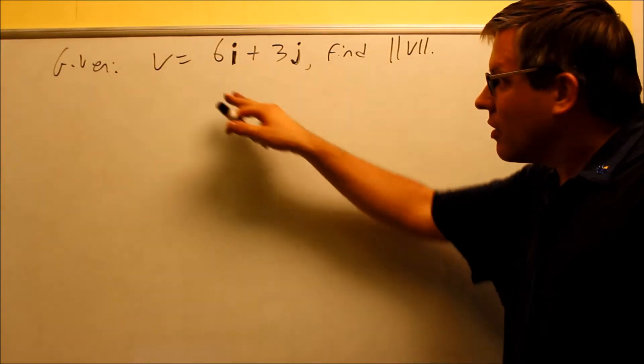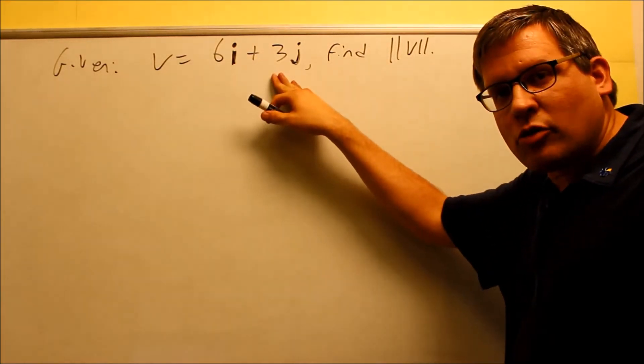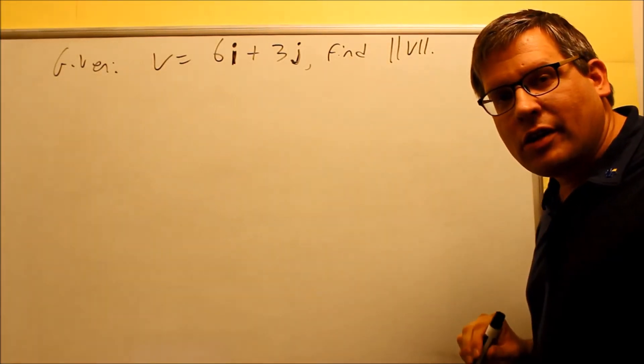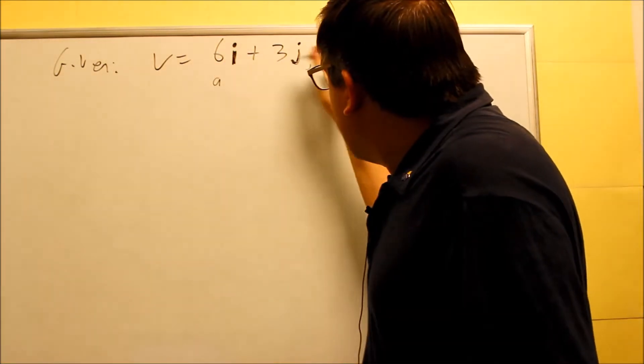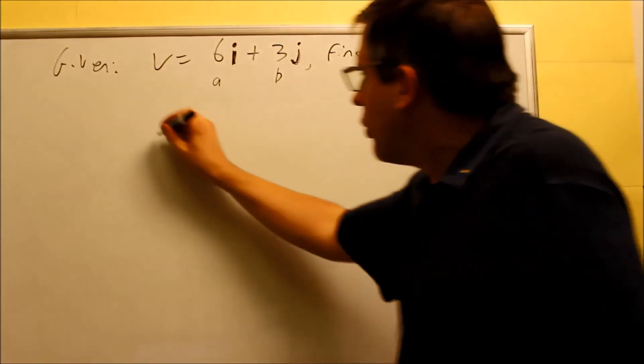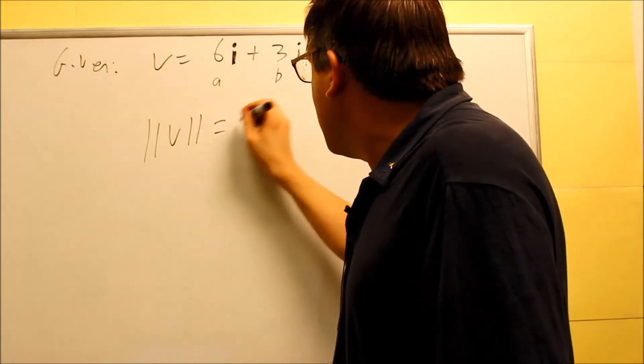Next example: 6I plus 3J is what we're given. Once again, we want to find the magnitude. Okay, so the 6 is A, the 3 is going to be B. We put it into our formula, magnitude of V. We have the square root, A² plus B².